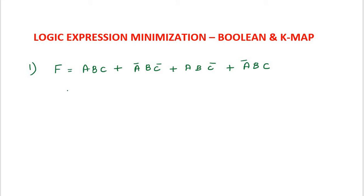Now I am going to explain how to minimize this logic expression using Boolean laws. In this expression, it consists of three variables. The number of variables is three. There are four terms in this expression.